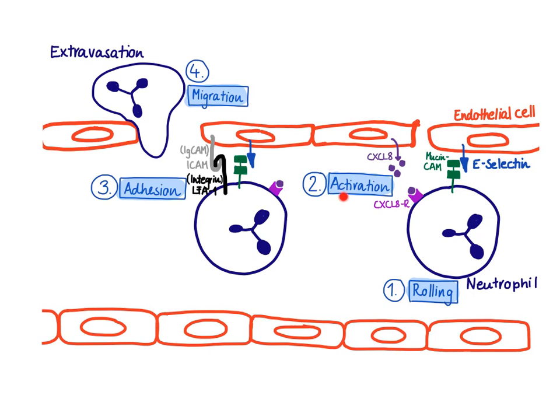The next step is activation of the neutrophil, which results in the expression of other sticky molecules on the neutrophil that allow a very tight interaction. The activation is facilitated by CXCL8, which is produced by macrophages but also later in an inflammatory response by the endothelial cells. CXCL8 receptors are present on neutrophils, and this allows activation of the neutrophil, which results in expression of integrins.